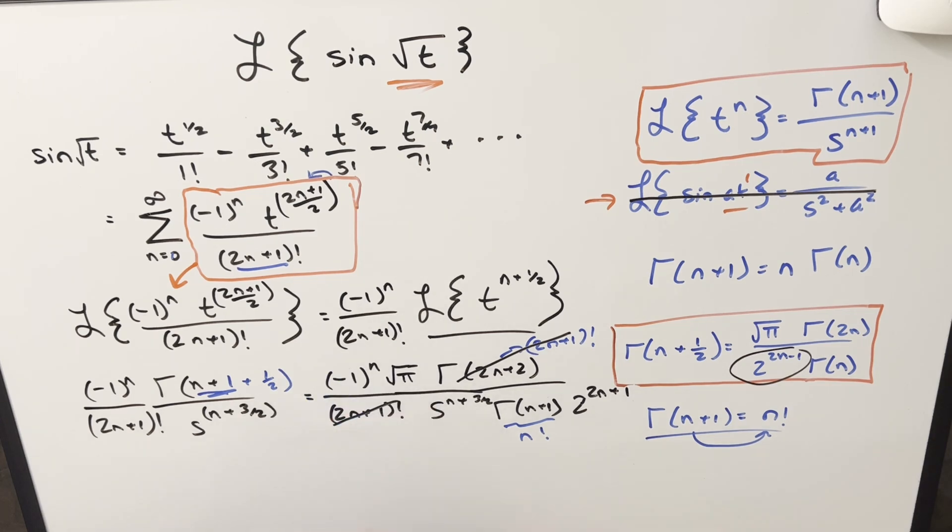Then one other simplification, I want to kind of, because we're putting this back into a series, I want to separate out all my constant values that don't have an n in it. So square root of pi is a constant. Here, we can write s to the n plus 3 halves as s to the n times s to 3 halves, creating a constant there. And then I'll write this as 2 to the 2n times 2, where 2 is going to be a constant.